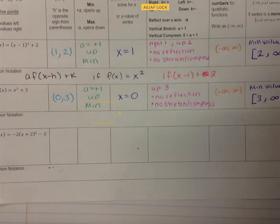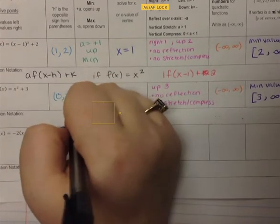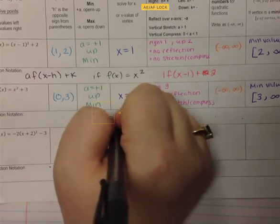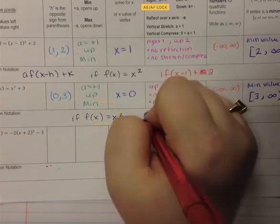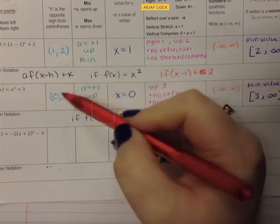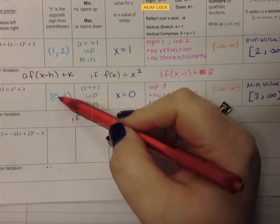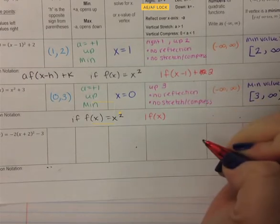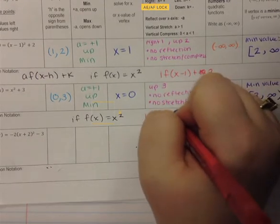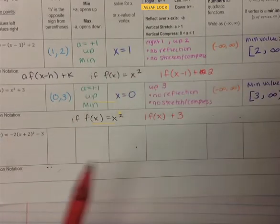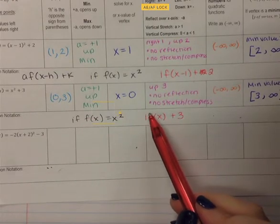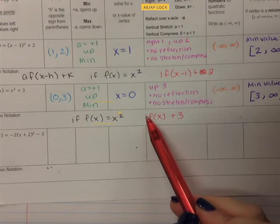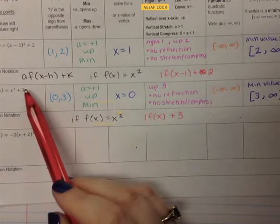For function notation on this one, if f(x) = x², it's going to look almost identical to the original problem. Our function notation is 1·f(x − 0) + 3, but x minus 0 is just x, so I'll write f(x) + 3. Since f(x) = x², I could literally replace f(x) with x², giving 1·x² + 3. That's exactly what that says.